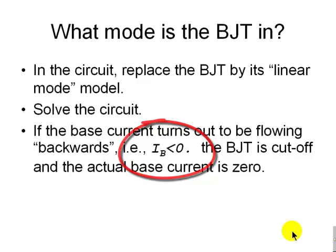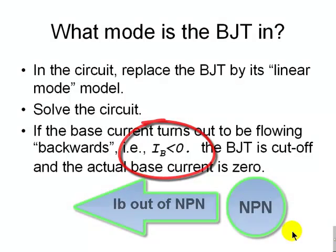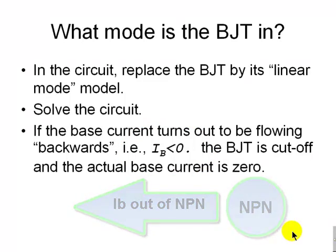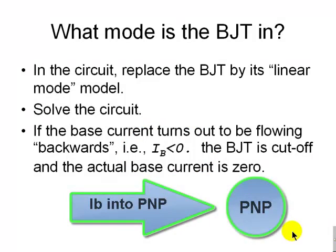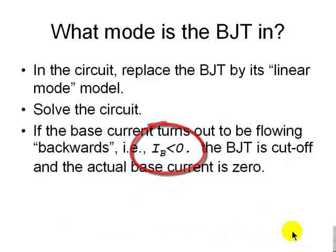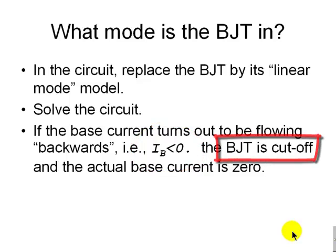Yes, we check IB. If it's flowing out of the transistor for an NPN transistor, or into the transistor for a PNP transistor — that is, if IB is negative — then the BJT is in cutoff mode, and its actual base current is zero. Its collector current is also zero in that case.